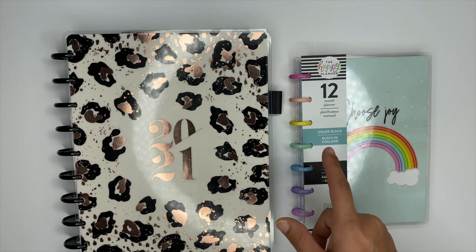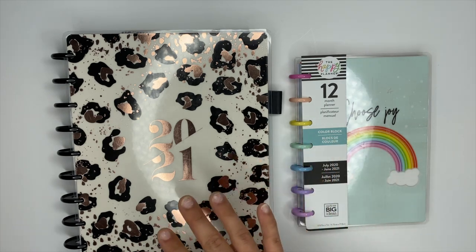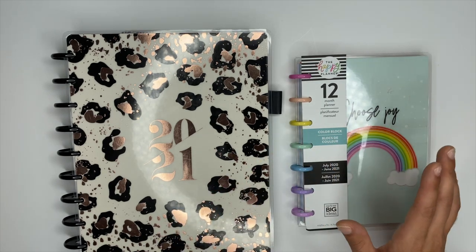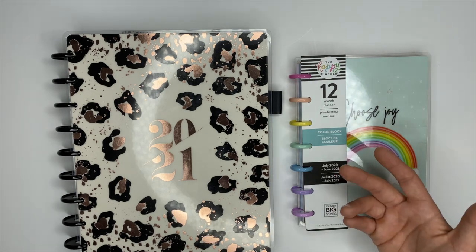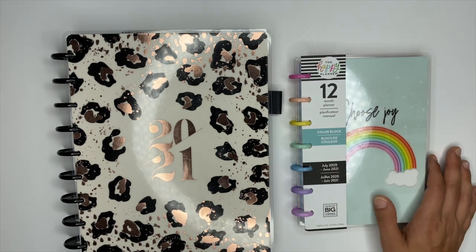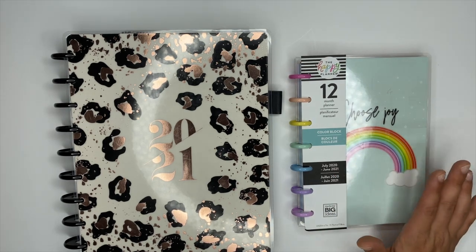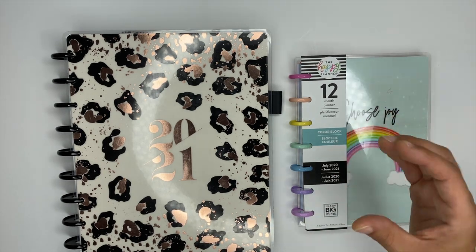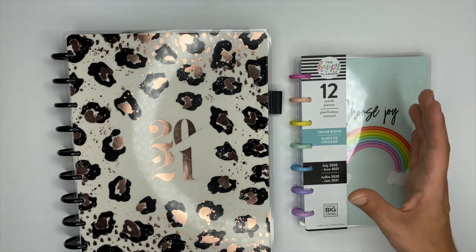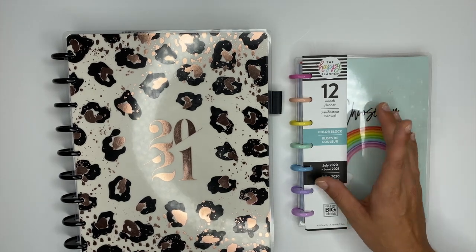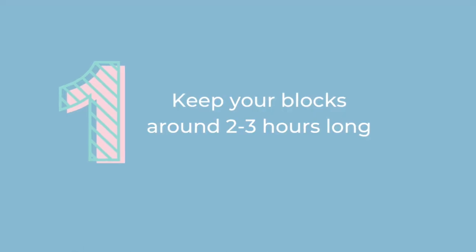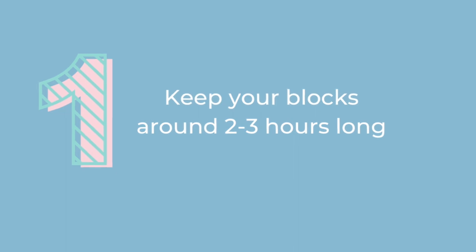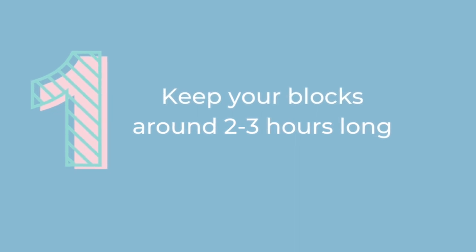You get to the end of your day and you still feel like you didn't accomplish anything. Block scheduling is going to help you get rid of the chaos and increase your productivity so you're actually accomplishing more in the day. A few tips: number one, you want your blocks to be about two to three hours long.